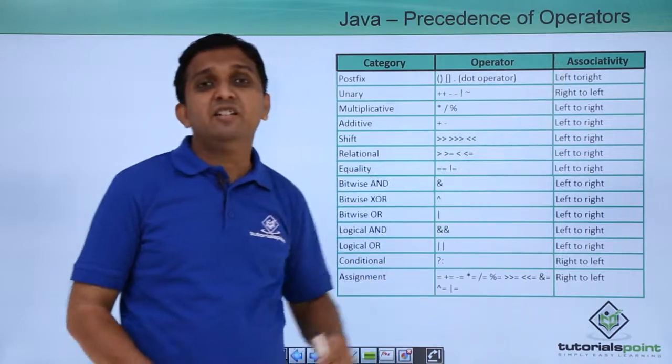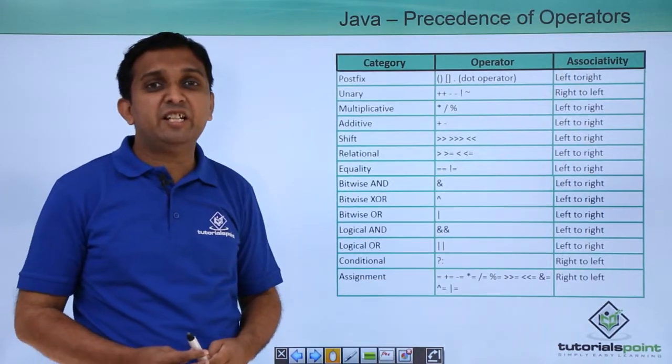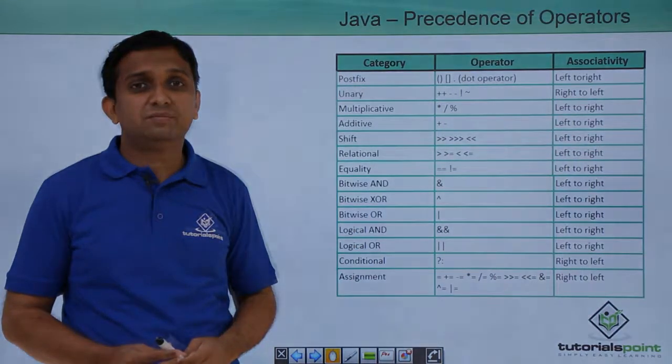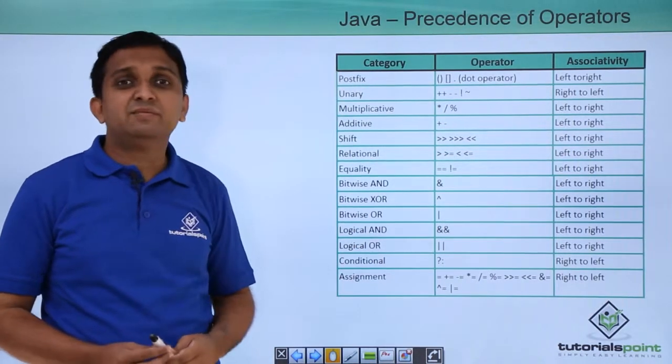If you see the last column, it is showing you the associativity, either from left to right or from right to left. This was regarding precedence and associativity.